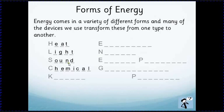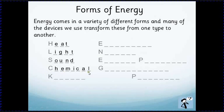The one that gets people a bit confused sometimes is chemical energy. This is the energy given out in chemical reactions — which might be obvious in chemistry — but food is also a source of chemical energy because it releases energy through reactions inside your body. Batteries also store chemical energy; they don't actually store electricity — they contain chemicals which can release their energy.